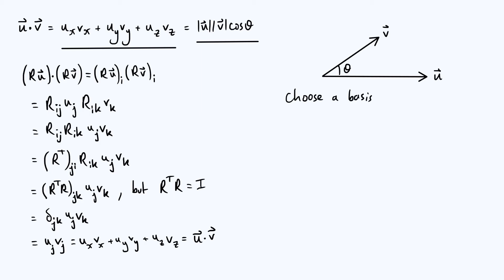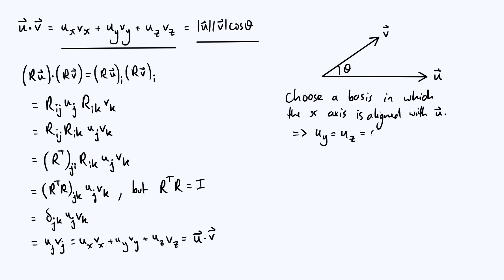Let's say this is our vector u and this is our vector v, and theta is the angle between them. We can evaluate the dot product in component-wise form in a very particular choice of basis — we're allowed to use whatever basis we want since we've just shown the result is the same. So I'll choose the most convenient basis: one in which the x-axis is aligned with the vector u. That implies the y and z components of u are both zero, so u·v simplifies to just ux · vx. And since the x-axis is aligned with u, ux is just the magnitude of u.